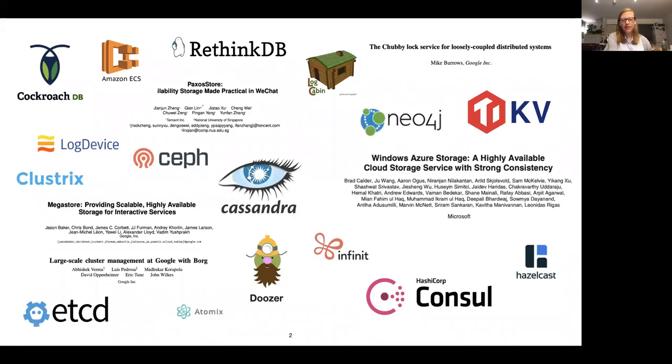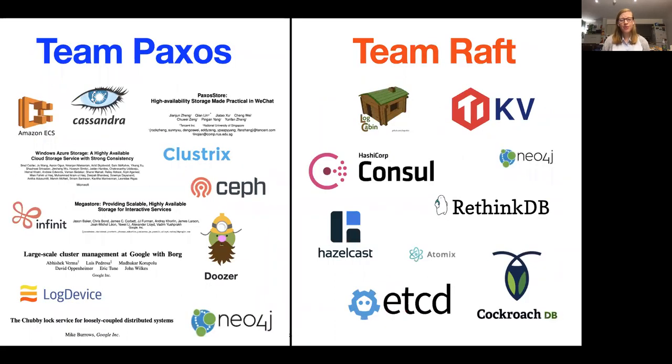If we take a look at the distributed systems that we have in production today, we find that a great number of them are using distributed consensus to implement state machine replication. Whilst there are hundreds of distributed consensus algorithms, in practice people seem to use one or another of two algorithms: team Paxos and the Paxos-based systems, and team Raft with the Raft-based systems.